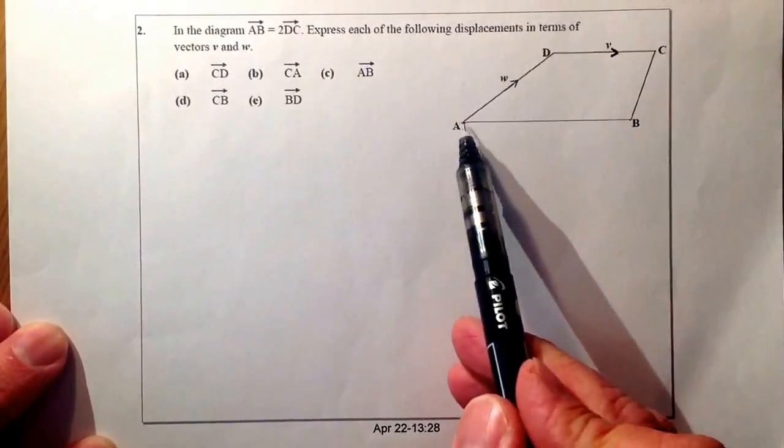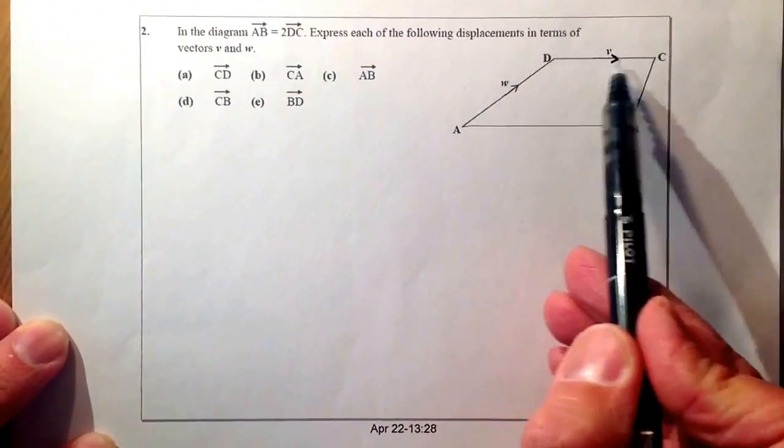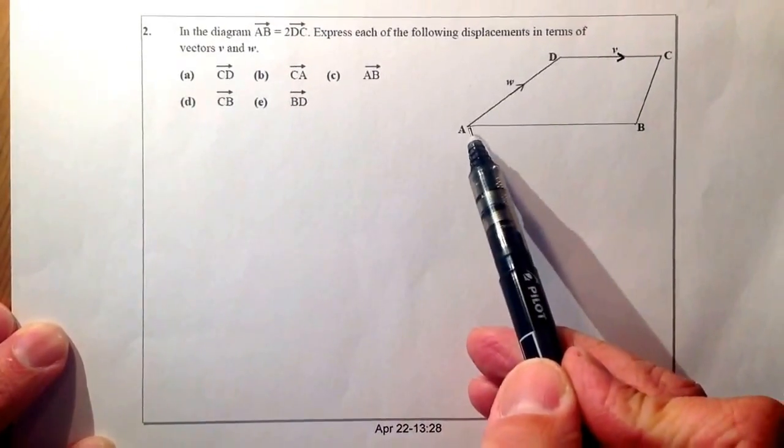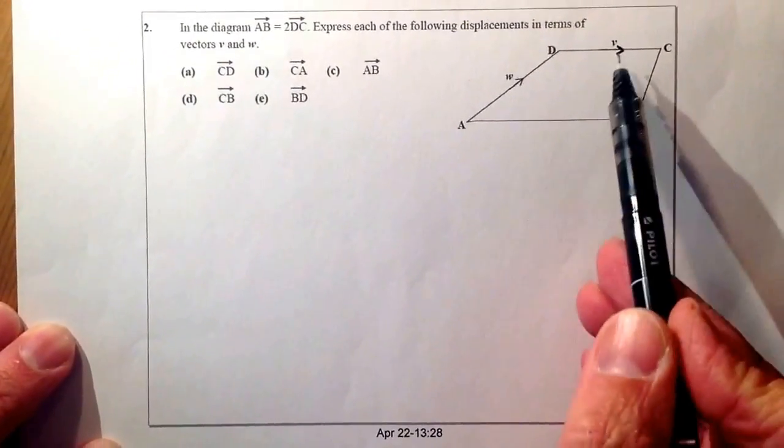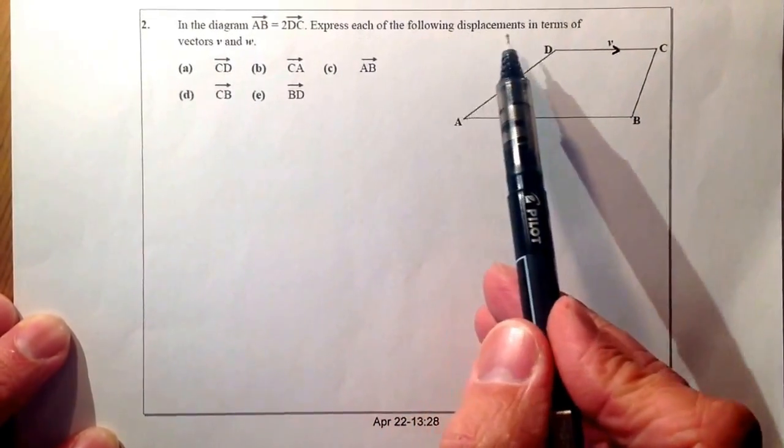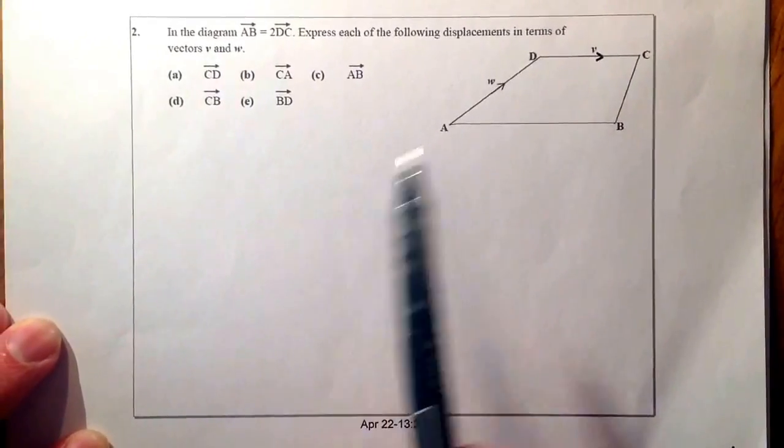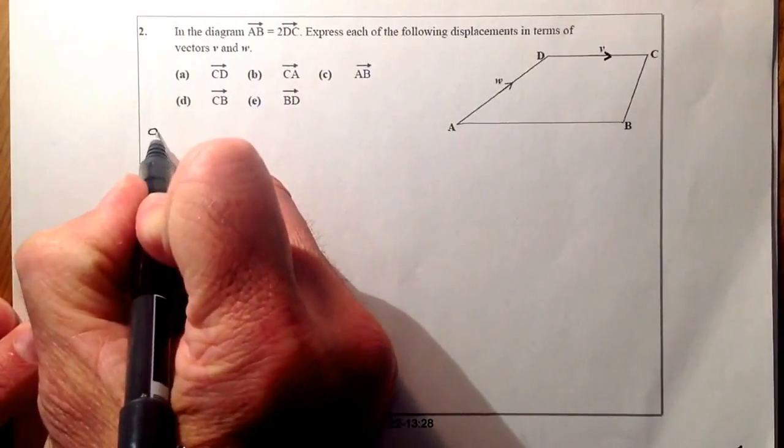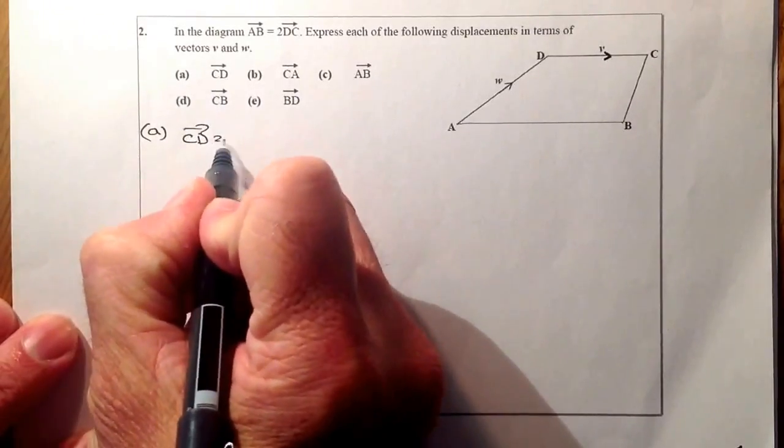In the diagram AB, so from here to here, is equal to 2 DC. So there's DC. So the vector going from A to B, it's double that there. It's in the same direction exactly, but just it's twice the size. Express each of the following displacements in terms of vectors V and W. So there's V and W there. Let's go ahead and we'll move a bit quicker on this one.